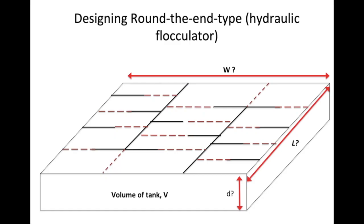Hi there, it's Muzaffar again. In the Round the End type hydraulic flocculator design questions, you are expected to find out the volume of the tank, which is V, and also W, or the width of the tank, the length of the tank, which is represented by L, and also the depth of the tank, which is represented by D.